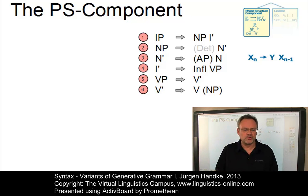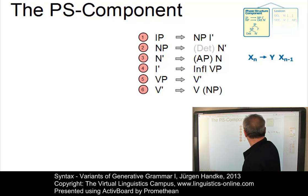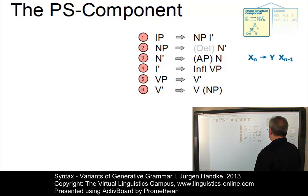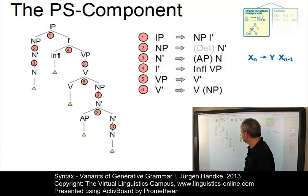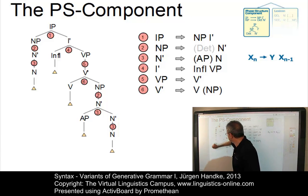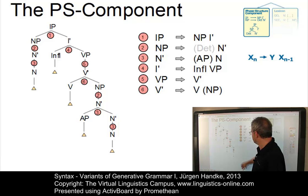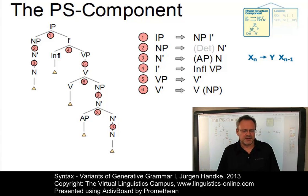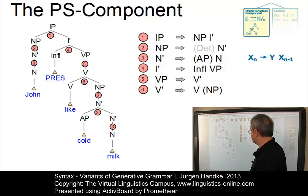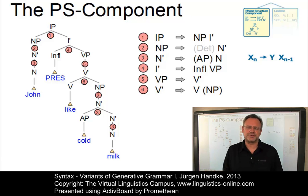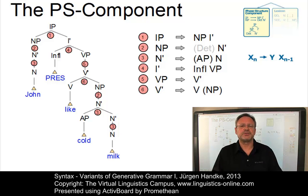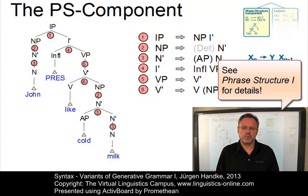In this second example, again all rules have been used. But here, rule number two has been used without the determiner option, and rule number three has been applied twice: in the subject noun phrase without the optional adjectival phrase, and in the object noun phrase with the adjectival phrase. A suitable sentence could be: John likes cold milk. By the way, the use of phrase structure rules has a long tradition with various milestones; consult my e-lecture Phrase Structure 1 for details.